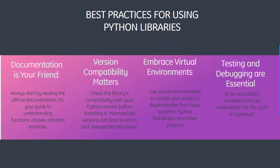Next, what are the best practices for using Python libraries? Firstly, documentation is your friend — always start by reading the official documentation; it's your guide to understanding functions, classes, and best practices. Then we have version compatibility — check that the library is compatible with your Python version before installing it, as mismatched versions can lead to errors and unexpected behavior. Thirdly, embrace virtual environments to isolate your project dependencies from your system Python installation and other projects. And finally, testing and debugging are essential to success.